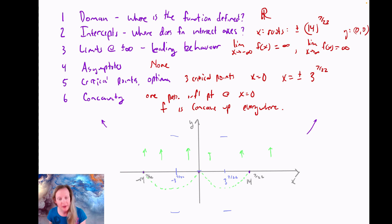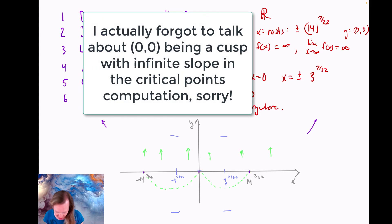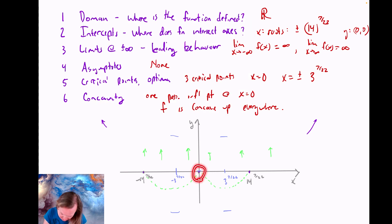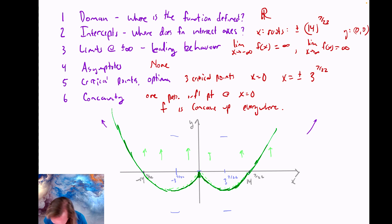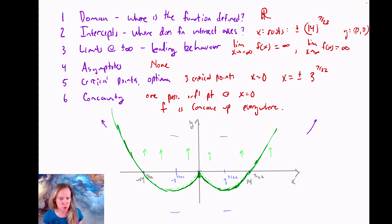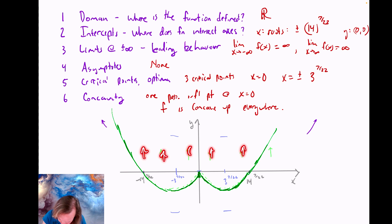We'll also cover this when we talk about critical points: this function has a cusp. I know it has a cusp because the slope at the origin goes to infinity and negative infinity. So I know my function goes vertical right there, just for a moment. The function is defined everywhere — no holes, all real numbers. I've got my intercepts. Limits at infinity go to positive infinity. Asymptotes: none. Critical points: three of them. And concavity: concave up everywhere.